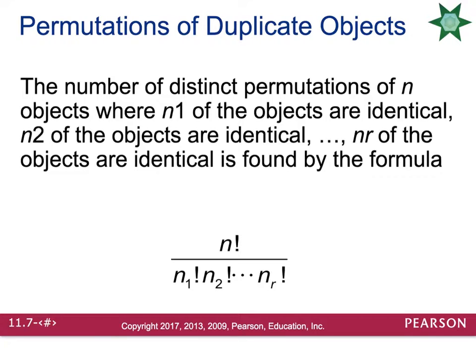So let's say there's N objects that are in your set, and N1 of them are identical, and N2 of them are identical, and N_R of them are identical. When you go to calculate that permutation, you have to put N factorial in the numerator, and then you'll put N1 factorial times N2 factorial times N_R factorial in the denominator. So let's look at an example of that really quick.